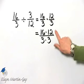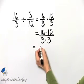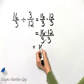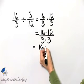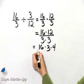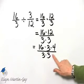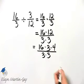Now, I know 12 and 3 have a common factor of 3, and that's all the common factors I see, so I'm going to take a moment and write the numerator as 16 times 3 times 4 over denominator 3 times 3, just so I can see that common factor there.